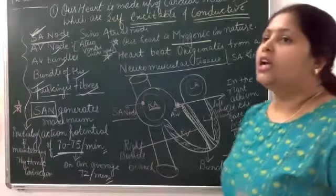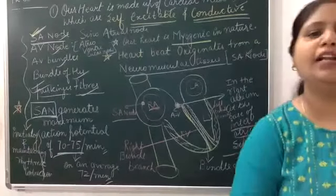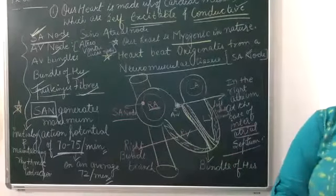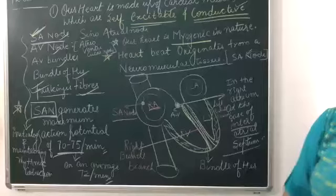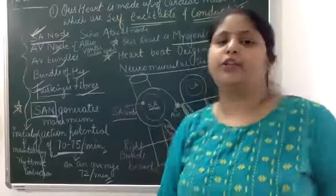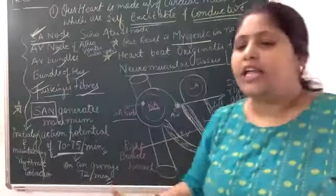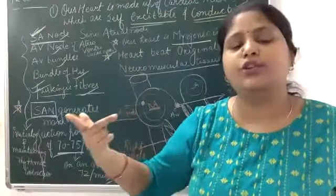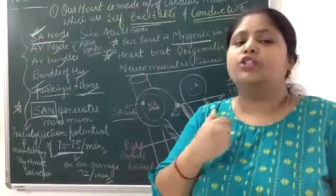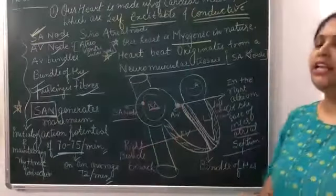So it is 72 contractions and relaxations per minute. One heartbeat is the rhythmic contraction and relaxation of the heart. One heartbeat consists of one systole — that is contraction — and one diastole — that is relaxation. So rhythmic contraction and relaxation together constitute one heartbeat.